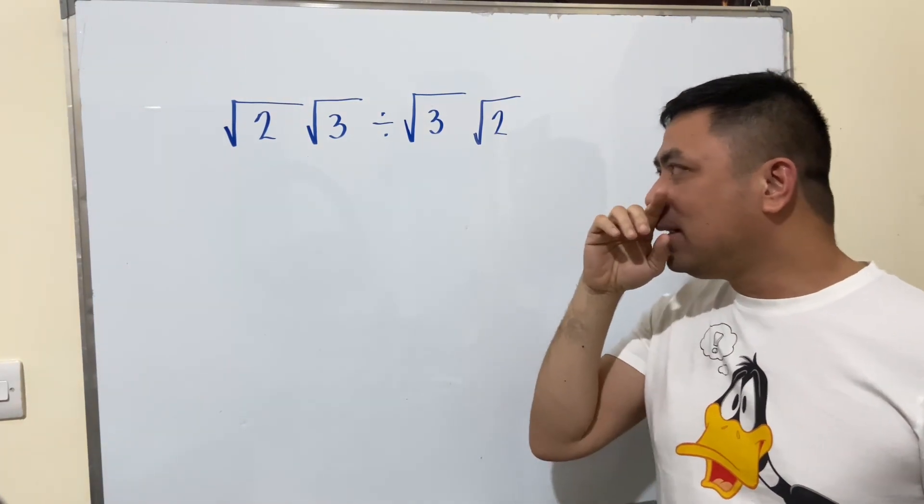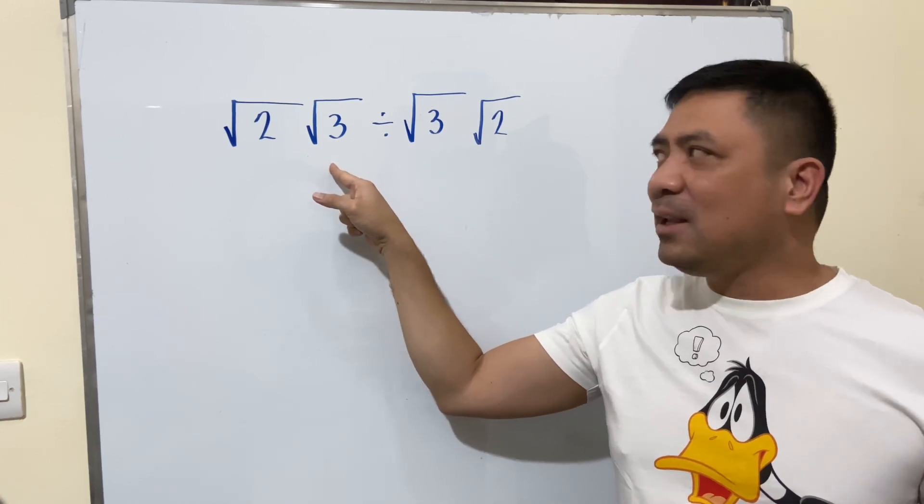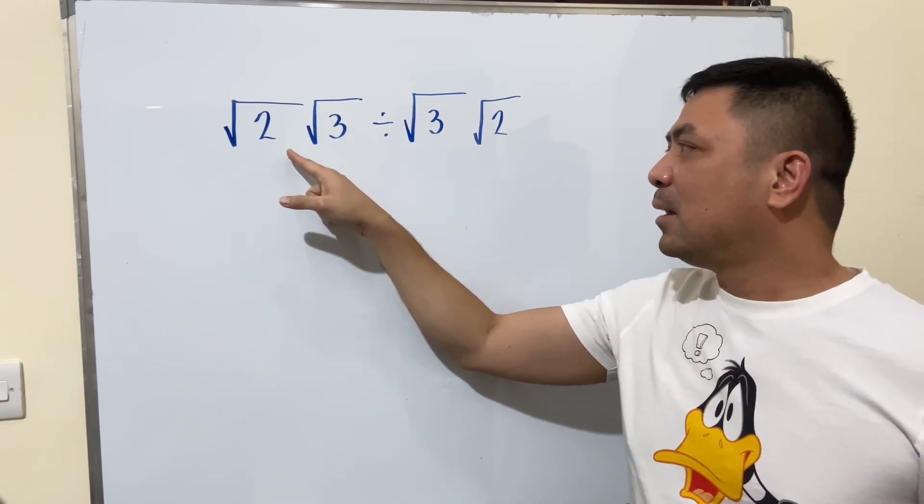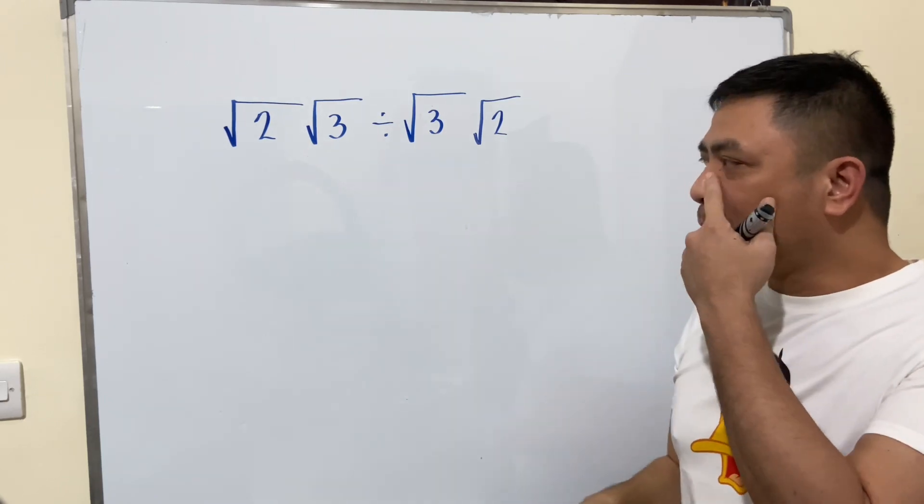If the problem is presented like this, that means square root of two and square root of three, there's a multiplication there. So we have to multiply square root of two and square root of three. Similarly here, it's square root of three and square root of two, so we have a series of operations.